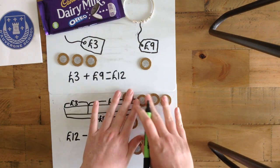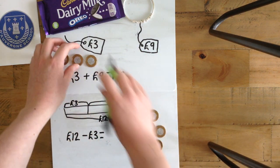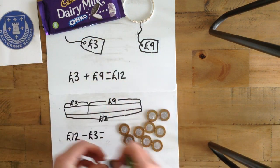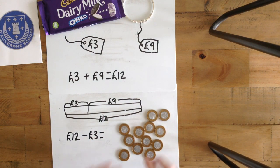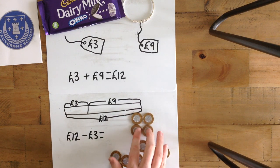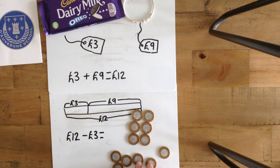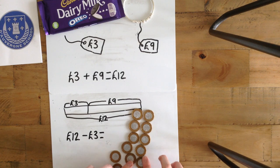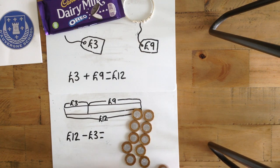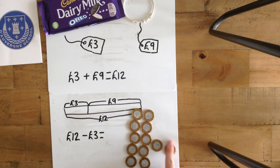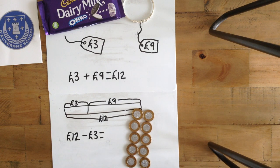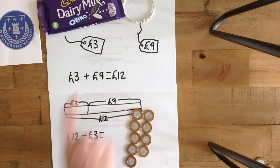So we've got our £12. Now let's take away £3. Let's check that this is £12 first. 1, 2, 4, 6, 8, 10, 12. This is our £12. Let's take away £3. 1, 2, 3. We should be left with £9.